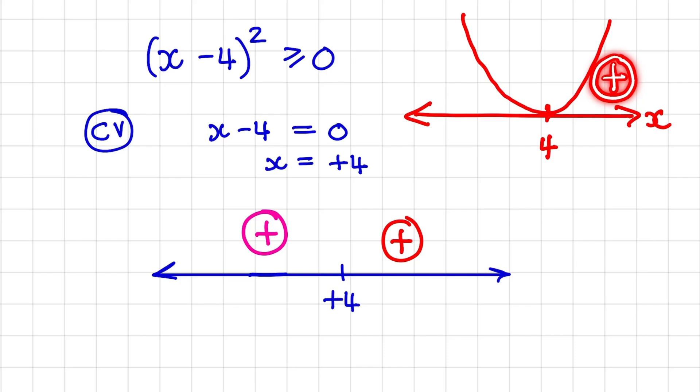So to the right of 4, the graph would be positive, and to the left of 4, the graph would be positive. Also, what you need to notice is,